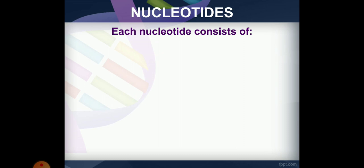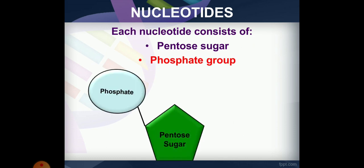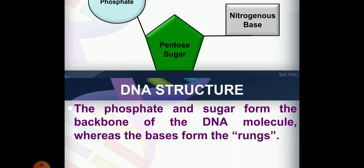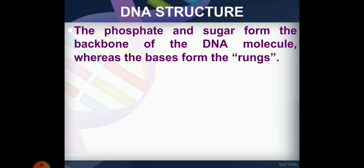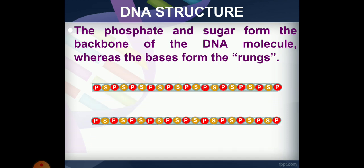A molecule of DNA is made up of millions of tiny subunits called nucleotides. Each nucleotide has three parts: a pentose sugar, a phosphate group, and a nitrogenous base. The phosphate and sugar form the backbone, and the bases form the rungs.